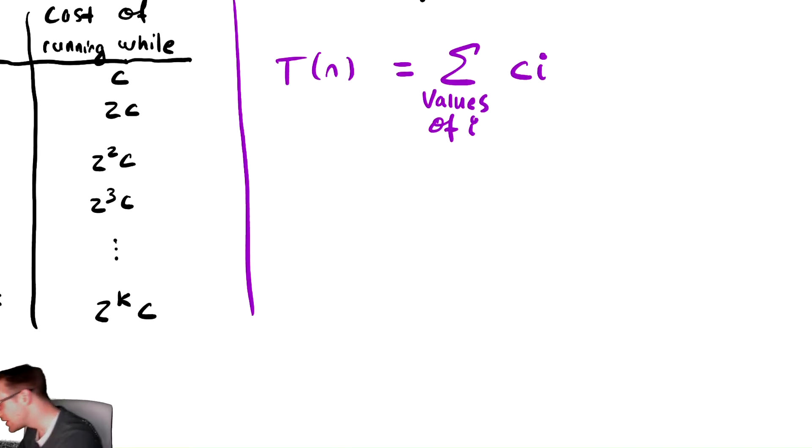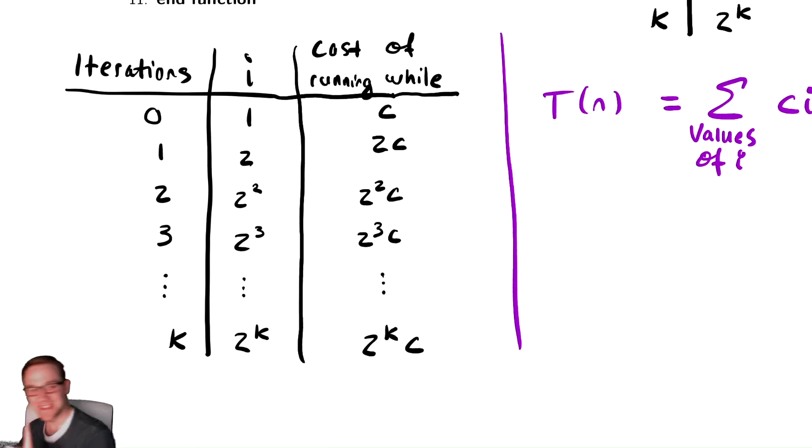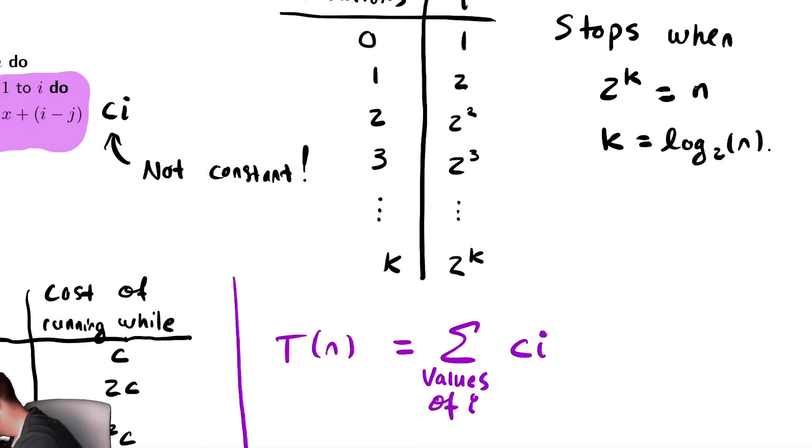Or, if we look at our table, I see something, which is this column about iterations. It does go up by 1 every time. It goes 0, then 1, then 2, then 3, all the way up until log base 2 of n. So, this column there goes from 0 to log base 2 of n.